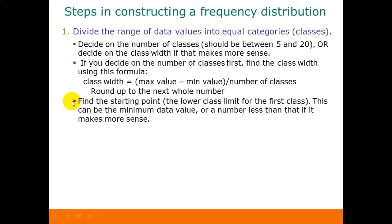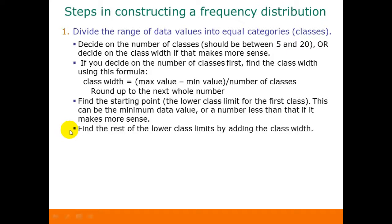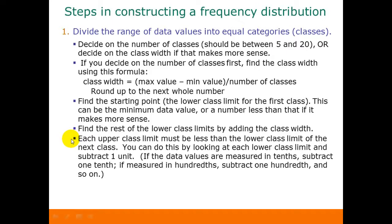Once we have found our class width, we need to find a starting point — the lower class limit for our first class. This can either be the minimum data value, or it can be a number less than that if that makes more sense. Once we have that initial lower class limit, we find the rest of the lower class limits by adding the class width on. Then we find our upper class limits, which have to be less than the lower class limit of the next class. We do this by subtracting one unit from each lower class limit, depending on how our data is measured — one tenth if data is in tenths, one hundredth if in hundredths, and so on.